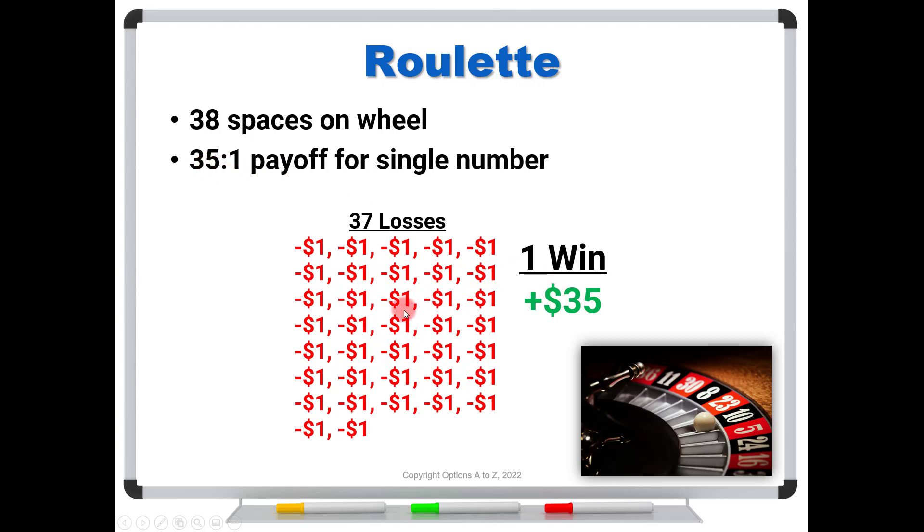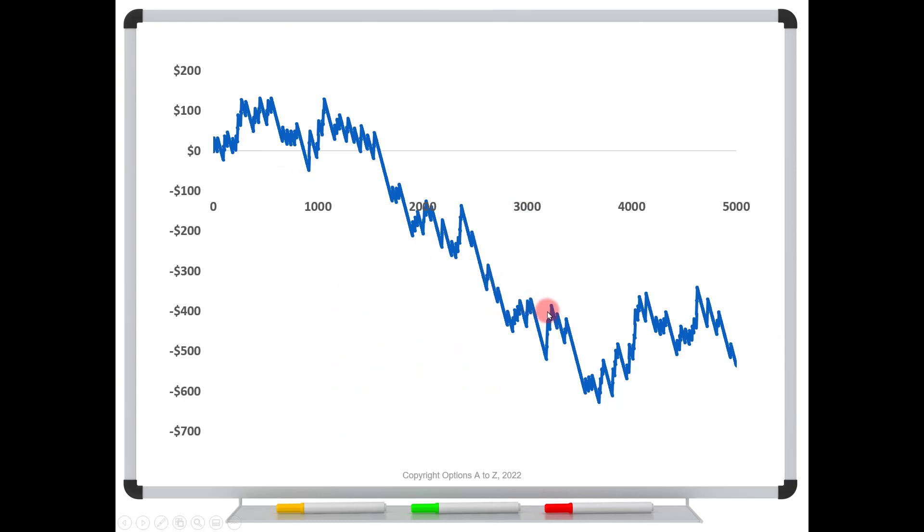Well, take a look at this. Look at your average losses. Sure, your average loss is a dollar. Take a look at your average win. Your average win is 35 dollars. Your average gain is 35 times larger than your average loss. And yet if you do this playing roulette at 35 to one payoff, this is what your profit and loss will look like again after 5,000 attempts, even though your average gain is 35 times larger than your average loss. So how can that be?